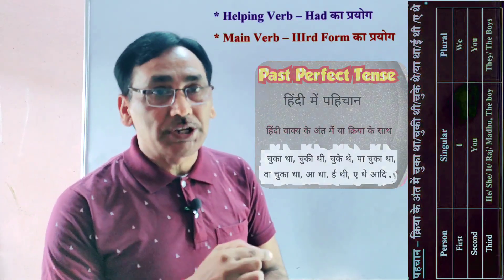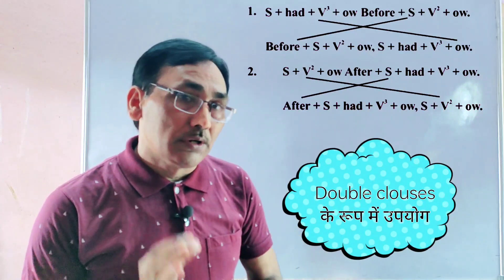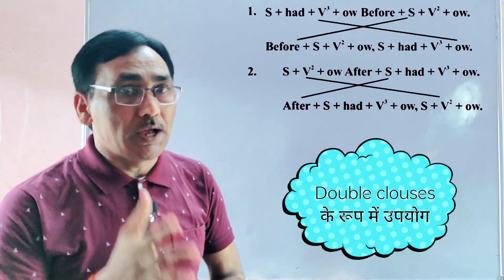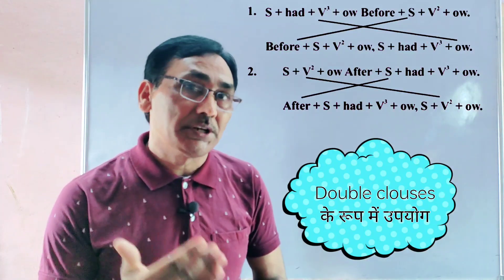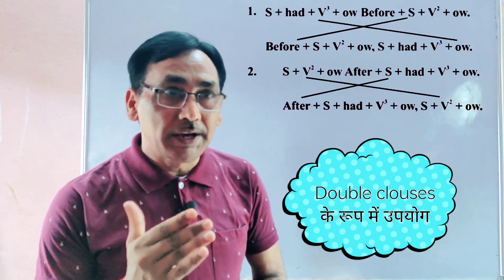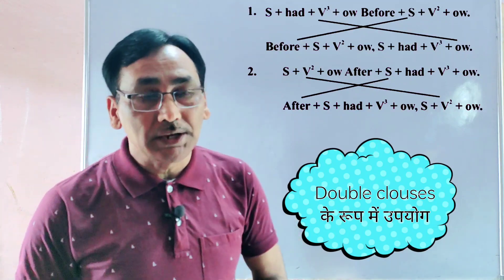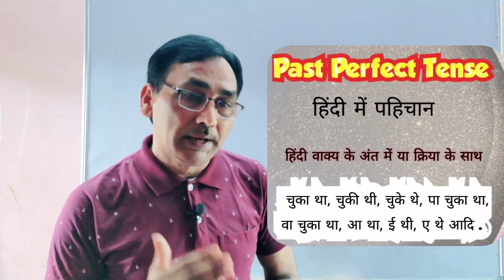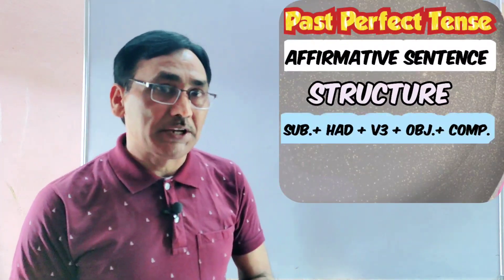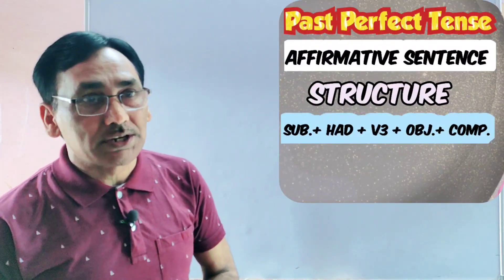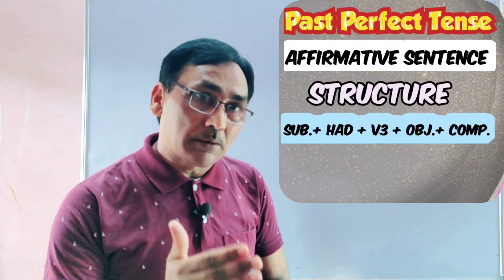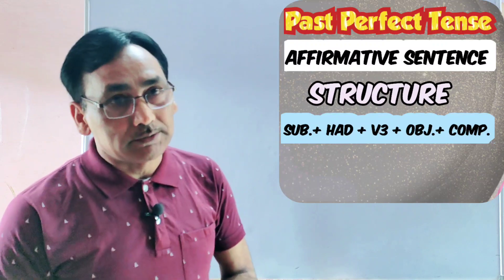We also have to take care of conjunctions like after, before, and when in double-clause sentences. For single clause, the affirmative sentence structure is: Subject + HAD + Verb (3rd form) + Object + Complement.